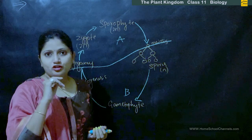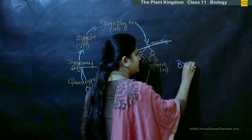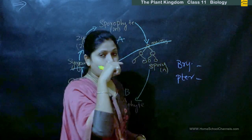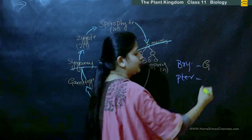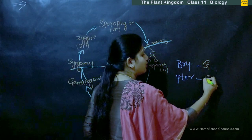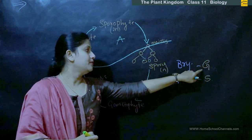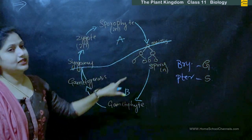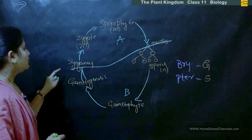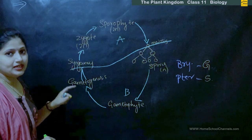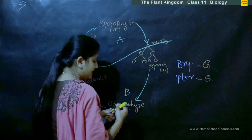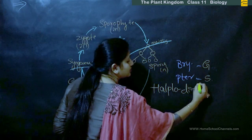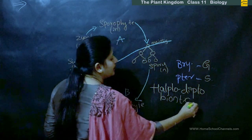In case of bryophytes, the photosynthetic or dominant part is the gametophyte. In case of pteridophytes, it is the sporophyte — the sporophyte is photosynthetic in pteridophytes and the gametophyte part is photosynthetic in bryophytes. We will come back to this after we study the life cycle. Now again we start with syngamy for the haplo-diplobiontic life cycle.